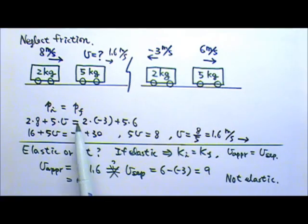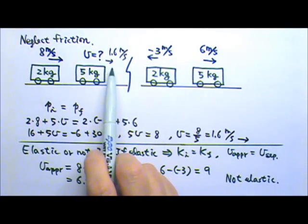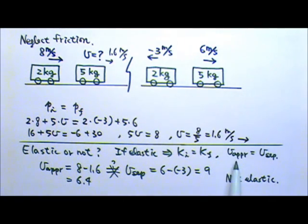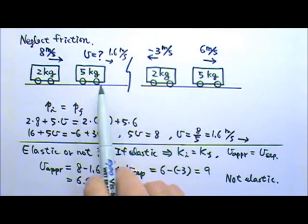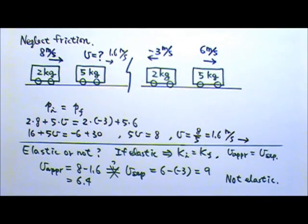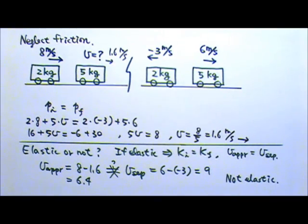So for this problem, we use conservation of momentum to find the unknown velocity. Then, if we want to know whether the collision is elastic, we use approaching speed equals separating speed to check. If they are equal, it is an elastic collision; if they are not equal, it is not an elastic collision.